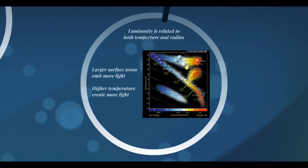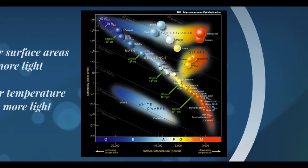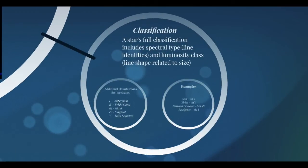Putting this all together, we find that the luminosity of a star is related to both its temperature and its radius. This HR diagram shows many different stars ranging from 0.08 solar masses up to about 60 solar masses. You can see supergiants and giants that don't fall along the main sequence, and some white dwarfs lower on the sequence. The larger a star is, the quicker it burns its fuel.